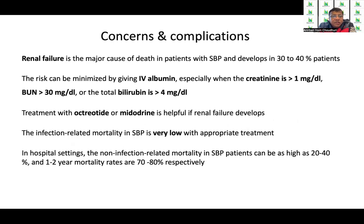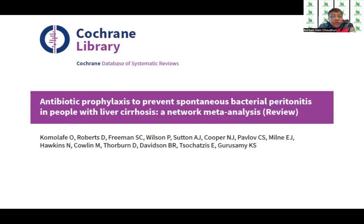Renal failure is the major cause of death in patients with spontaneous bacterial peritonitis, occurring in nearly one-third — 30 to 40% — of patients. This risk can be minimized by giving IV albumin, especially when creatinine is greater than 1, BUN is greater than 30, and total bilirubin is greater than 4. Treatment with octreotide or midodrine is helpful if renal failure develops. In-hospital non-infection-related mortality in SBP can be as high as 20 to 40%, with a one to two year mortality of 70 to 80%, primarily due to liver failure or renal failure secondary to liver failure.